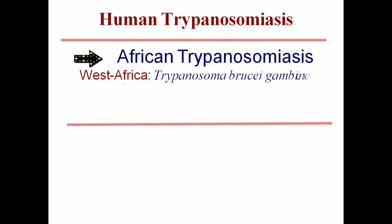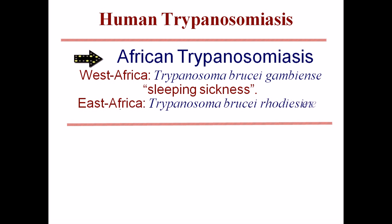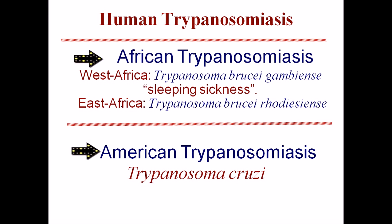African trypanosomiasis, or African sleeping sickness, is caused in West Africa by Trypanosoma brucei gambiense. In East Africa it is caused by Trypanosoma brucei rhodesiense. For American trypanosomiasis, it is caused by Trypanosoma cruzi. Americans can get this disease only if they visit Africa, because the tsetse fly vector is not present in America — it is mostly found in Africa.